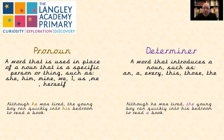The other term we've got on the screen at the moment is 'determiner.' Now, determiners — these are words that you've used for years and years without possibly realising exactly what they were. But they're words that introduce a noun. They give us a clue as to whose noun it is, how many there are, whether it's a particular one, whether it belongs to someone, and so on. So determiners are words like an, a, every, this, those, the. And in our sentence example, we've got: although he was tired, the young boy ran quickly into his bedroom to read a book. It just tells you a little bit about the nouns in this particular sentence.